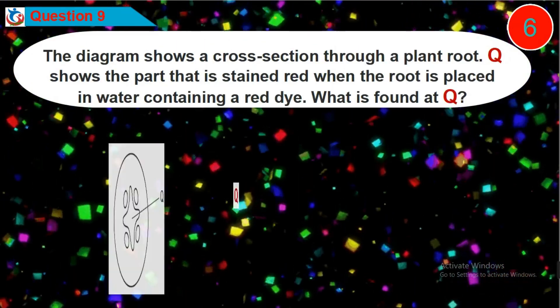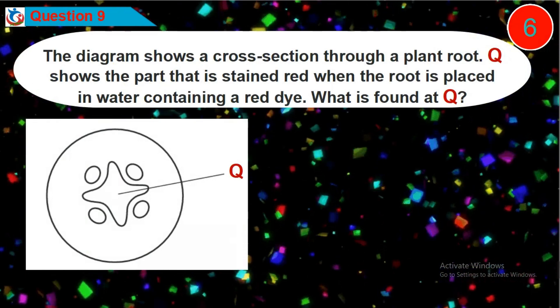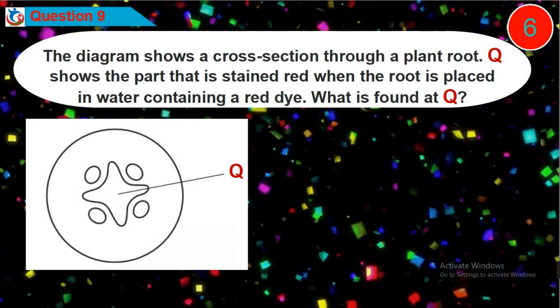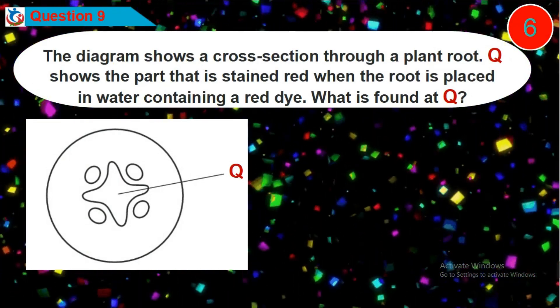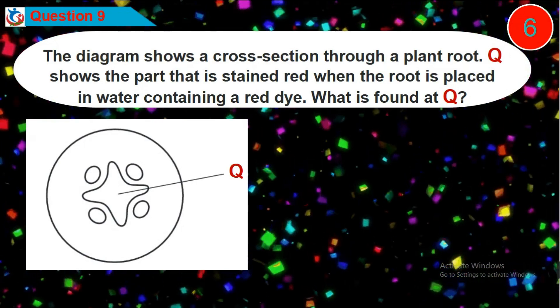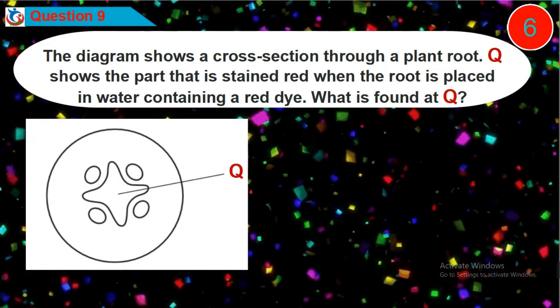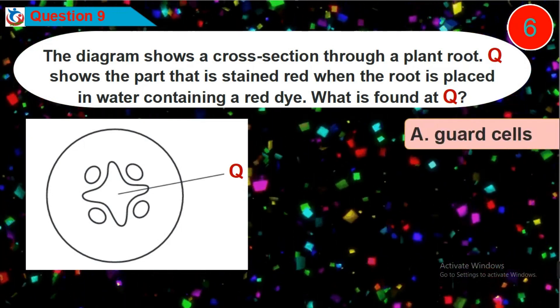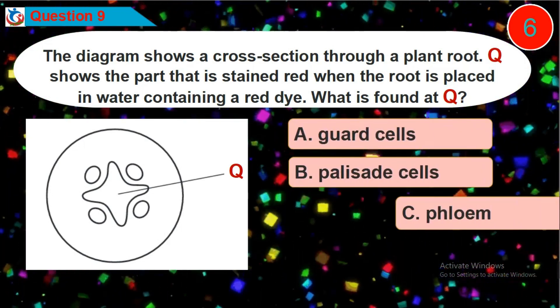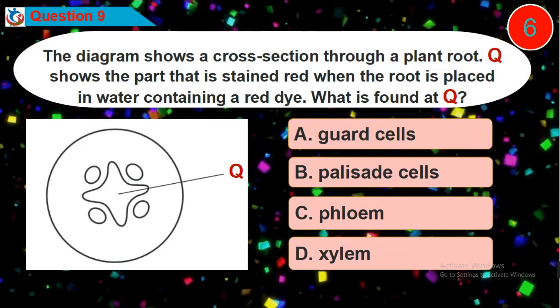Question 9. The diagram shows a cross-section through a plant root. Letter Q shows the part that is stained red when the root is placed in water containing a red dye. What is found at Q? Is it option A, B, C or D?